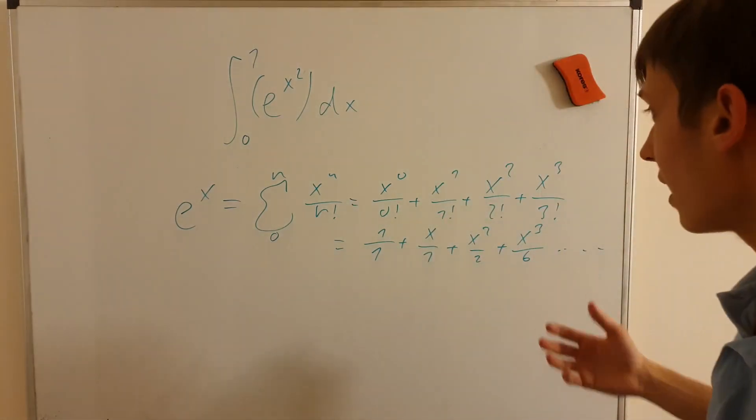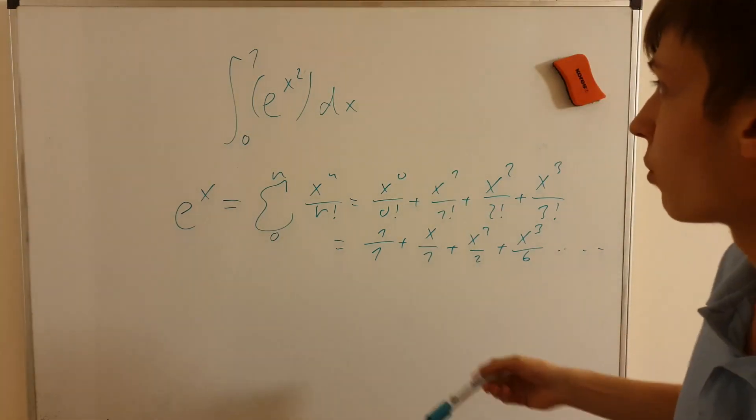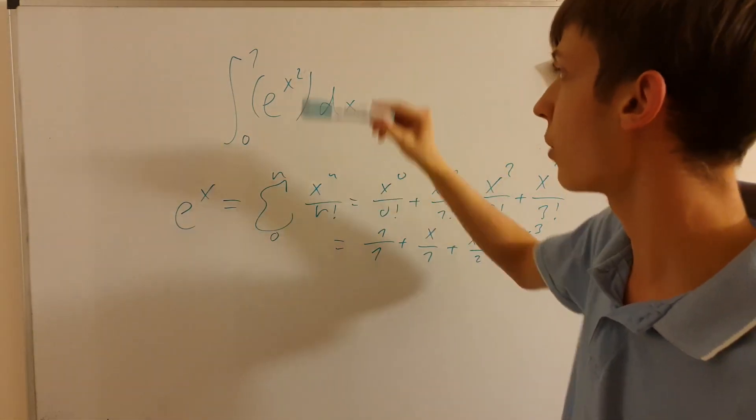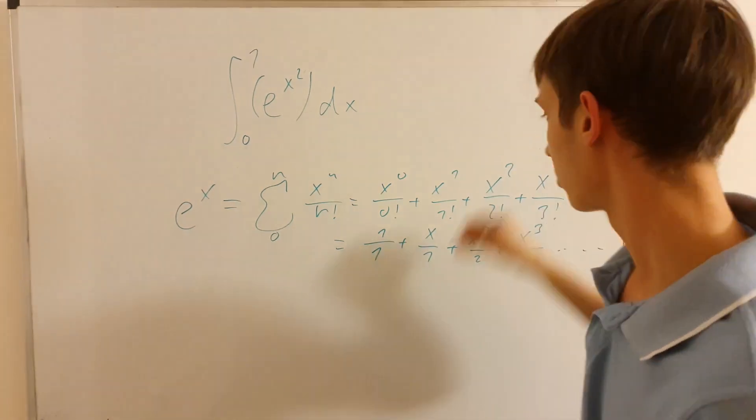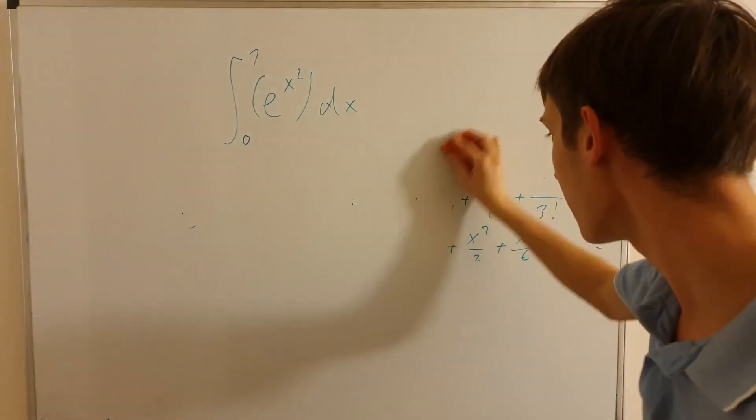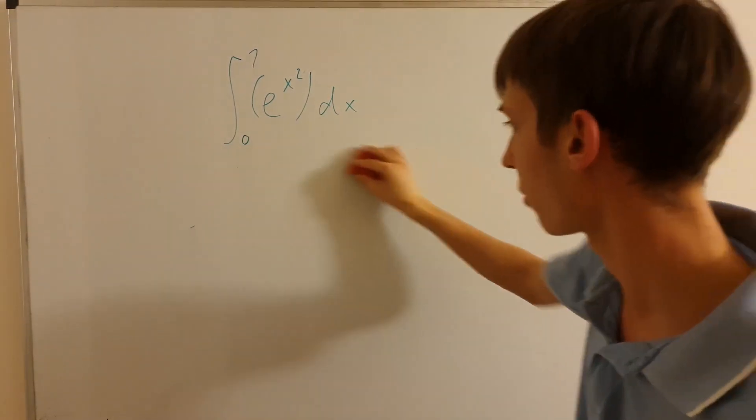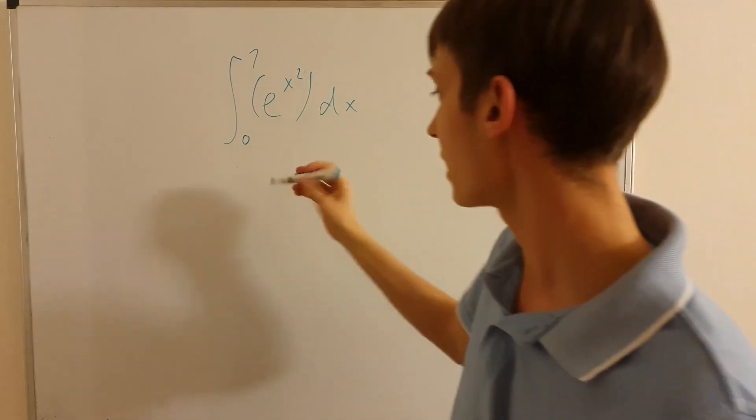So the idea here is, we don't have e to the x straight out, but we have e to the x squared. That means wherever there was x, I would have to replace it by x squared. So the same kind of thing will apply now. So basically, now I said that the rule for e to the x, in Taylor polynomial translation is this.